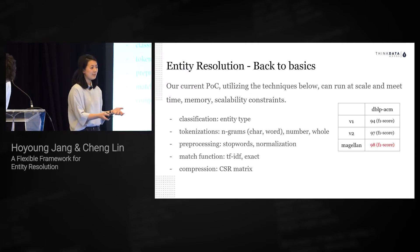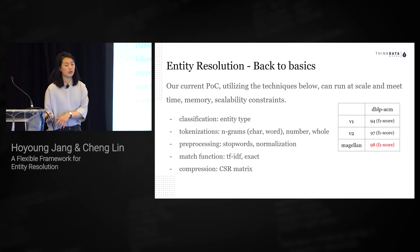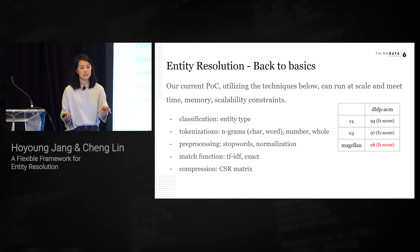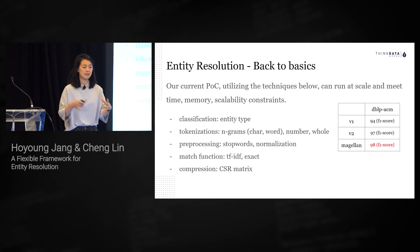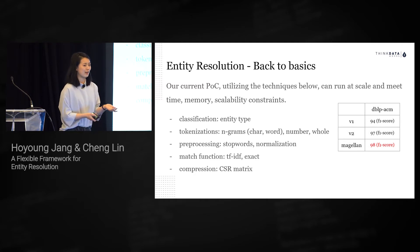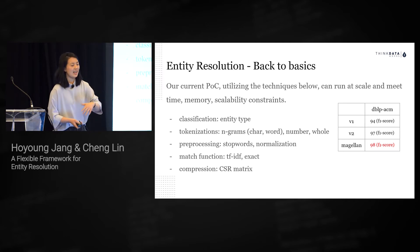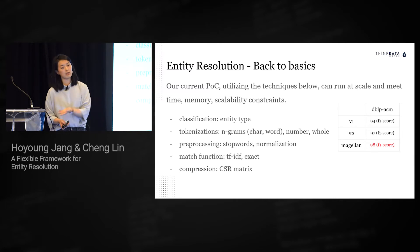In our later attempts and our current proof of concept, ER Squared, we tried more traditional NLP techniques. While more basic, they turned out to be close in accuracy but far more scalable and less memory intensive. We use a classifier to determine entity type, then different tokenization and preprocessing techniques optimized for that entity's structure, and finally different matching functions — the main one being TF-IDF — compressing representations using sparse matrices. On the DBLP-ACM ER benchmark data set, we scored an F1 score of 97, just under Magellan — the current leading ER system in academia — which scores 98.